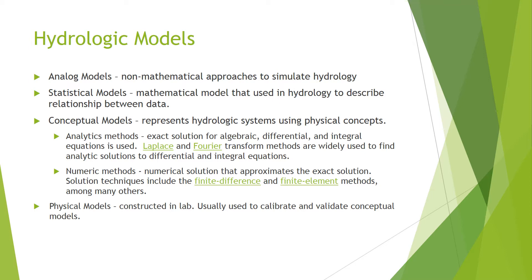Statistical models are a type of mathematical model commonly used in hydrology to describe data as well as relationships between data using statistical methods. Hydrologists develop empirical relationships between observed variables, find trends in historical data, or forecast probable storm or drought events.